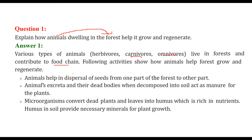Animals facilitate seed dispersal — they are one of the important factors in dispersal of seeds from one part of the forest to another. The excreta of animals, and when animals die and are decomposed, their excreta acts as manure for upcoming plants.